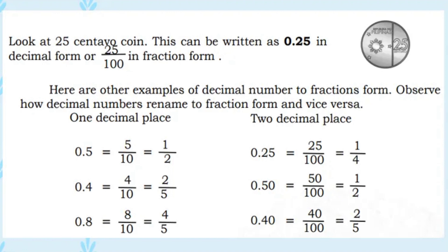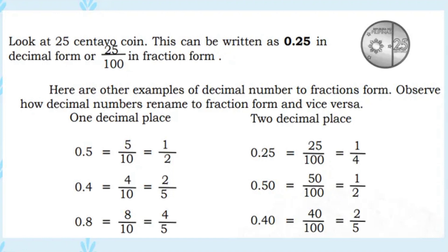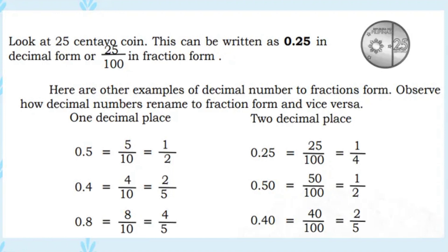Observe how decimal numbers are renamed to fraction form and vice versa. 0.5 or 5 tenths equals 5 over 10. 0.4 or 4 tenths is 4 over 10. 0.8 or 8 tenths is 8 over 10. 0.25 or 25 hundredths is 25 over 100 in fraction form.